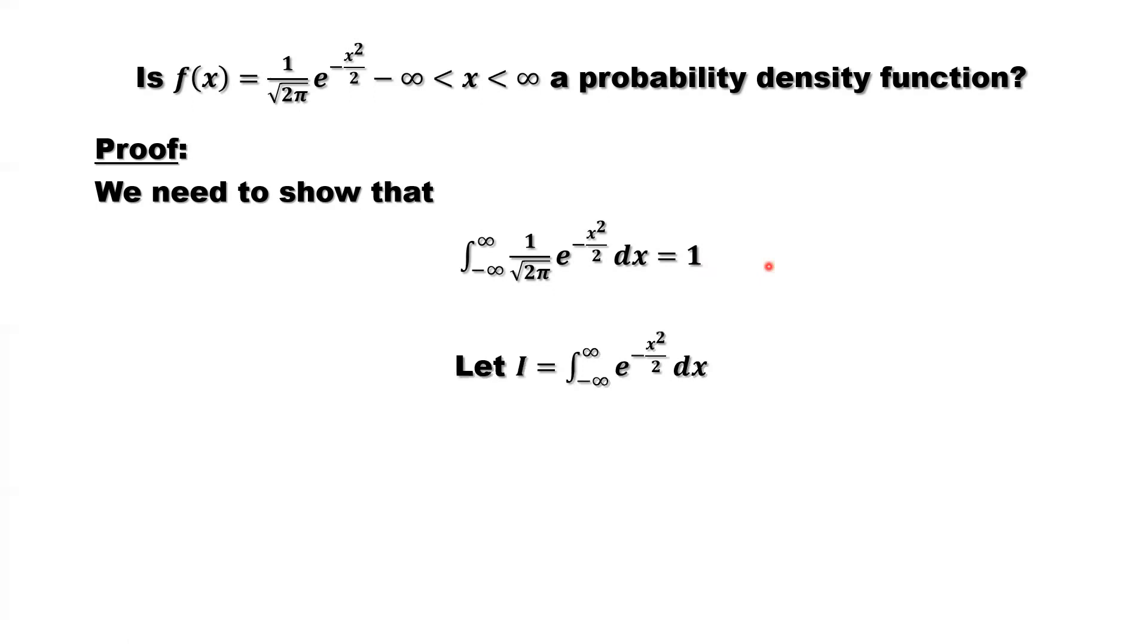We define a new integral just to drop the constants here. If we drop the constants, we only need to show this I equals square root of 2π. From this equation, we can see that both sides times the square root of 2π. This side, this constant disappeared. That side we have square root of 2π.